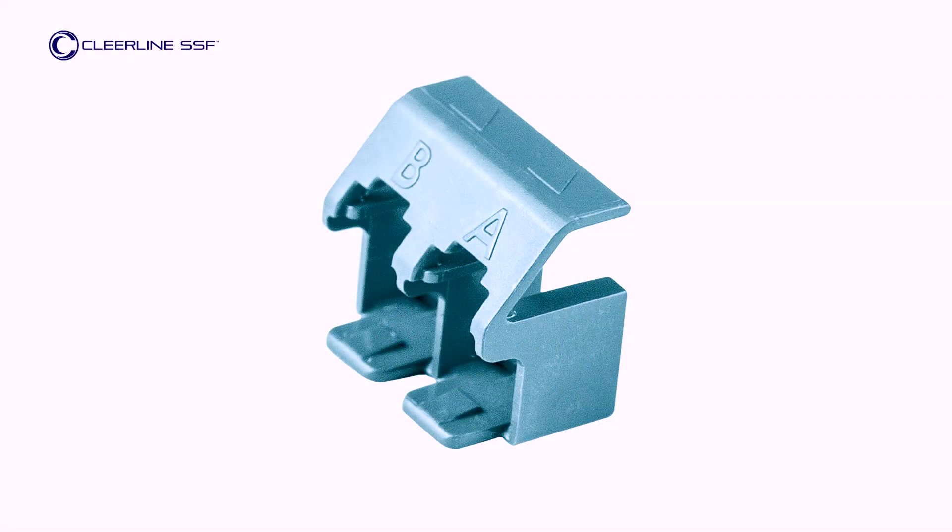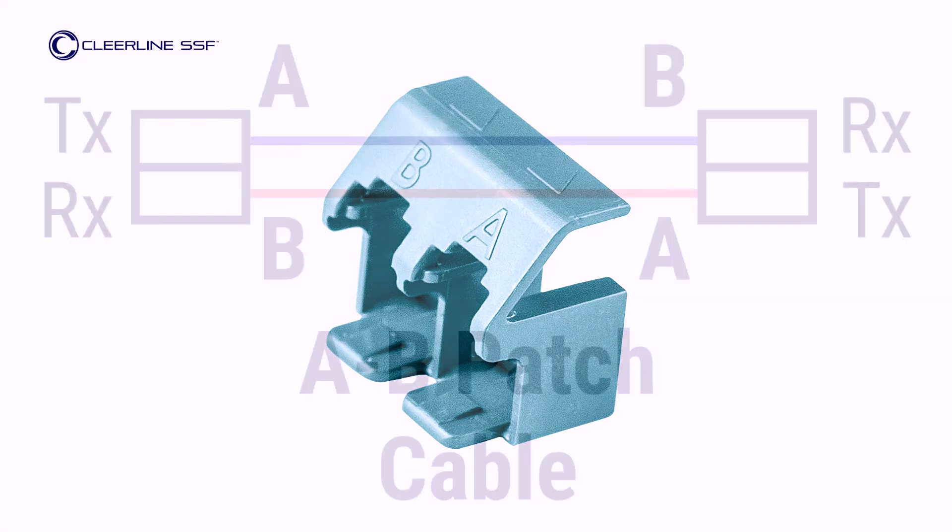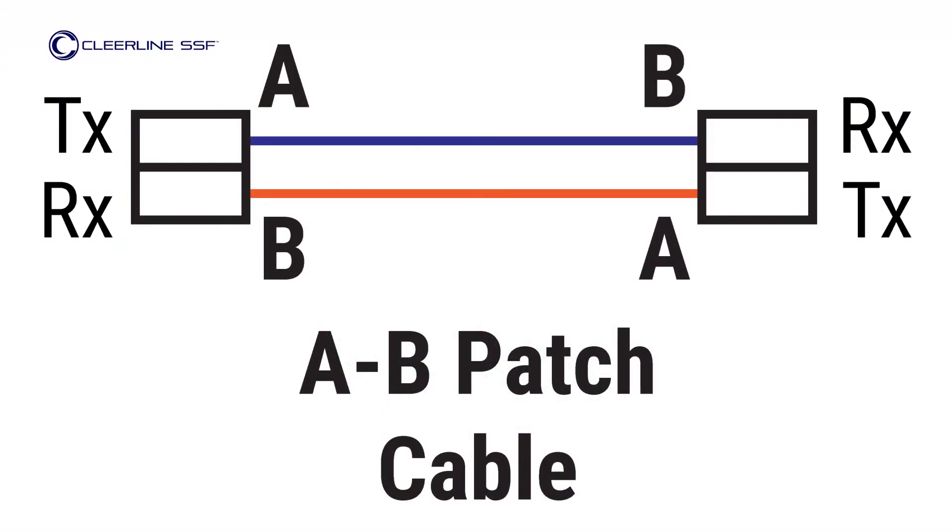Note before installing clips that each opening is labeled A or B. This is to help select correct polarity. Polarity defines the signal direction. A-B, or A to B polarity, is most common for duplex cables and ensures that transmit connects to receive.